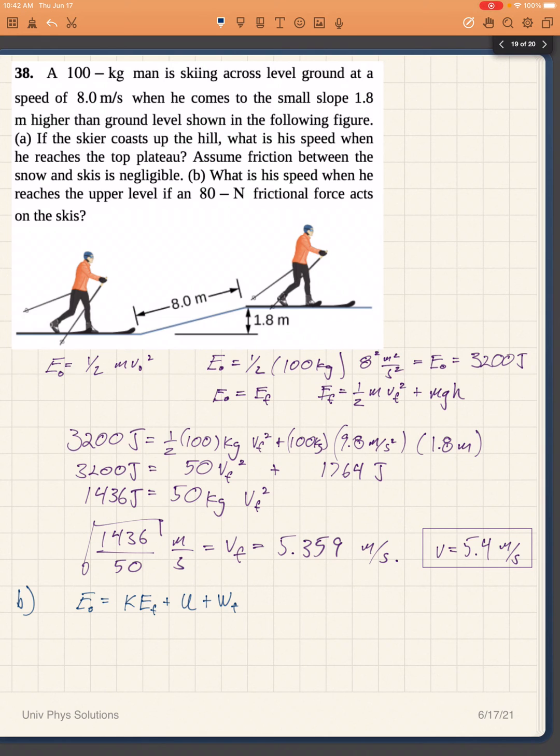We know the form of the final kinetic energy, which is one half m v final squared. We know the form of the potential energy, which is going to be mgh. And the form of the work lost to friction will be the displacement times the force, because the displacement and the force are parallel. The work will be equal to F times X. And here the displacement X will be equal to 8 meters.